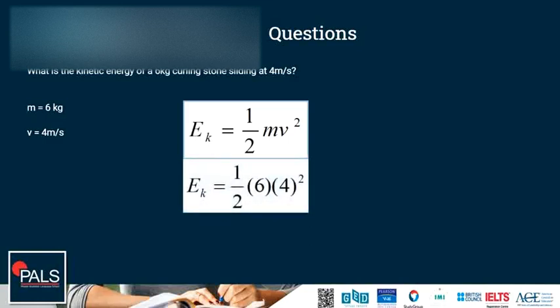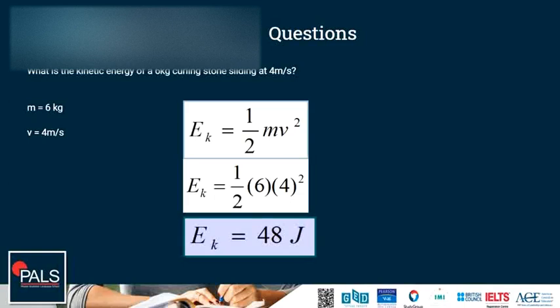We fill in the values: half times 6 times 4 squared. And this will give us 48 joules of kinetic energy.